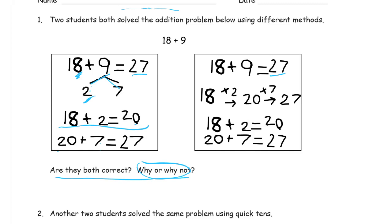So this one uses the arrow way, so it looks different but it's still 18 plus 2 gets them to 20 and then adding the 7 to get 27.